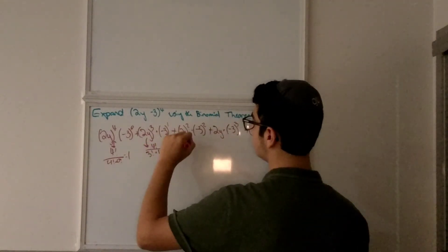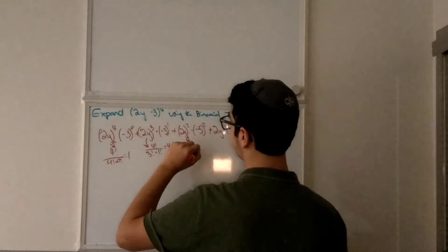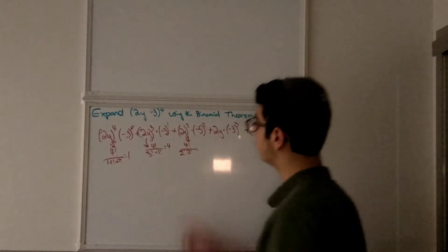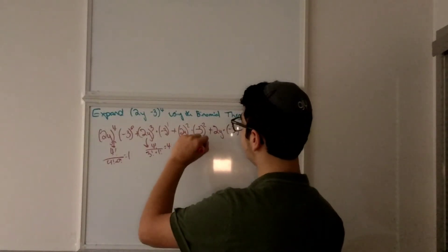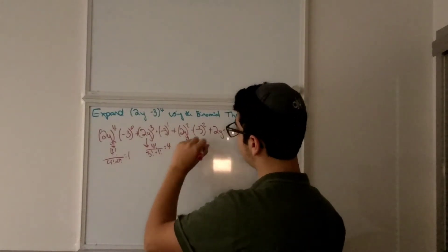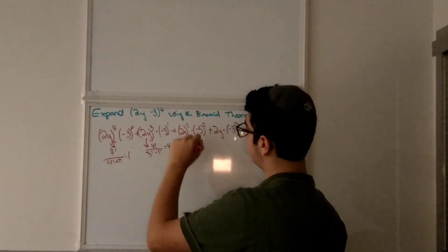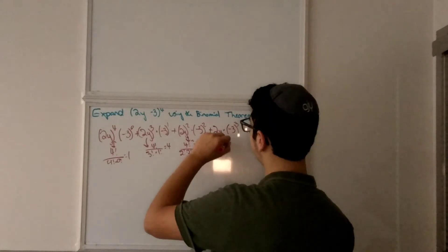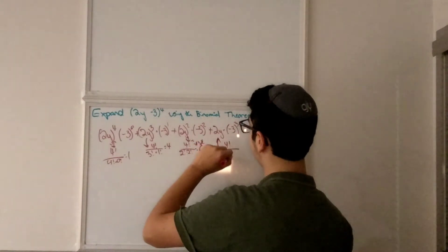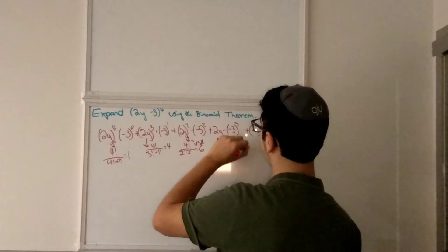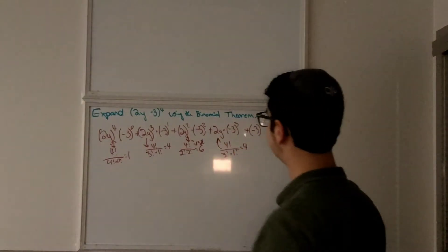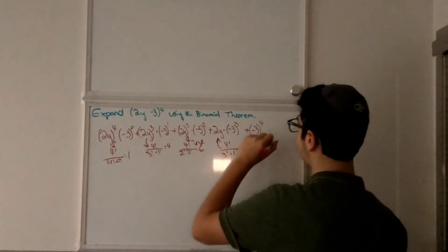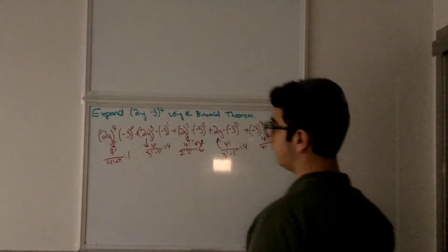Then this one is 4 factorial divided by 2 factorial times 2 factorial, which equals 4 times 3 times 2 divided by 2, then divided by 2 again, so it equals 6. Over here, it's 4 factorial divided by 3 factorial times 1 factorial, which equals 4. And then the last one is 4 factorial over 4 factorial, which equals 1.